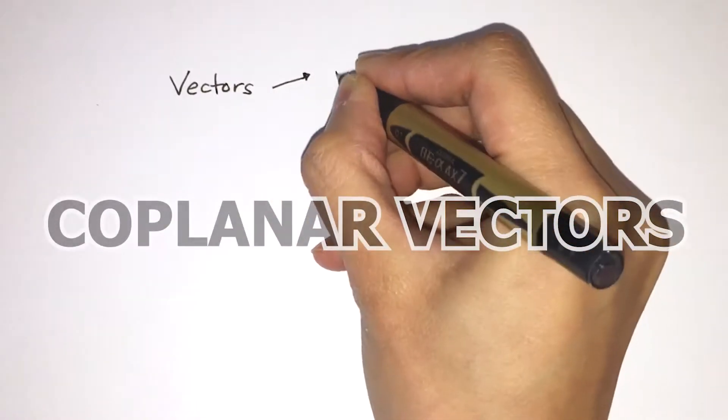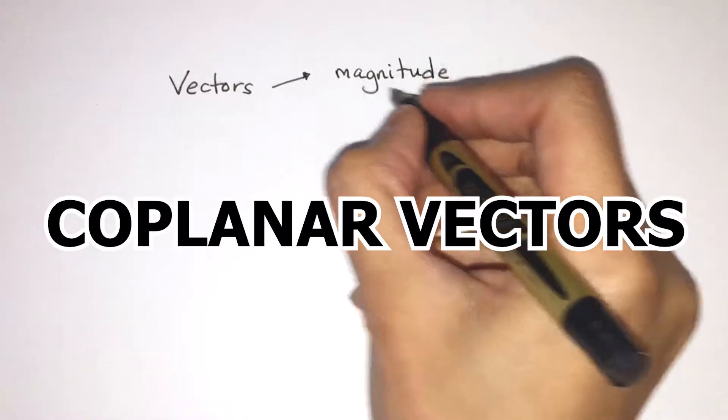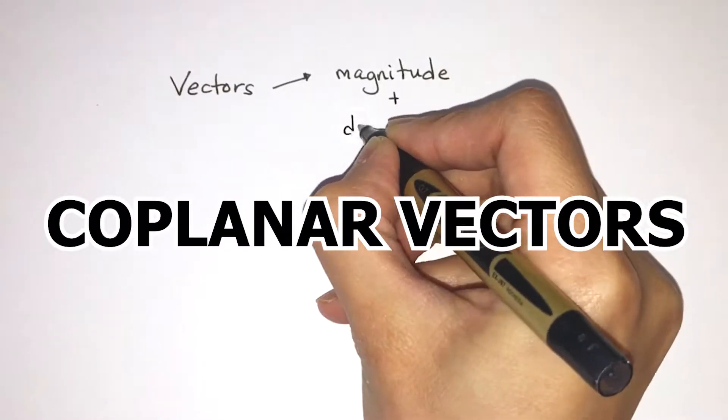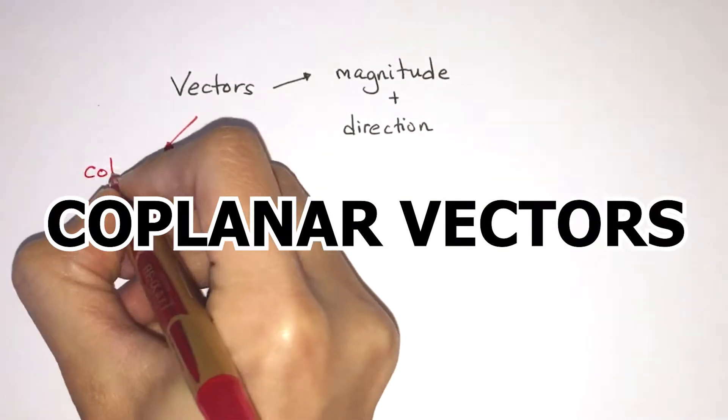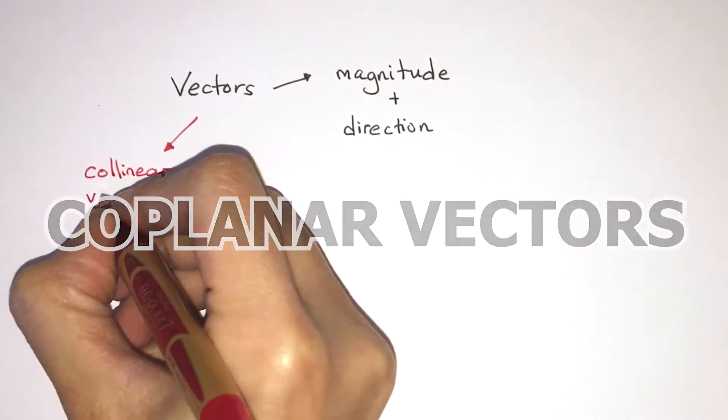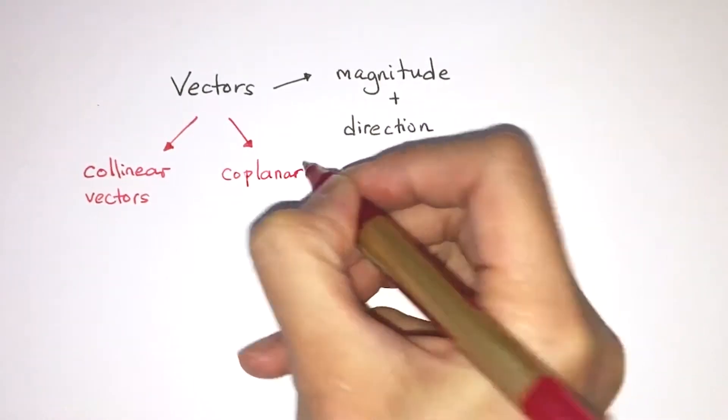You would already know that a vector quantity is a quantity that has both magnitude and direction. Let's look at vectors in more detail and think about how we can add vectors together. But depending on whether these vectors are collinear vectors or coplanar vectors, we need to add them differently.